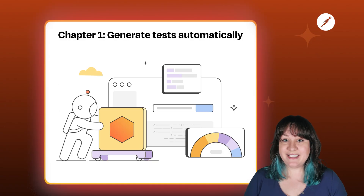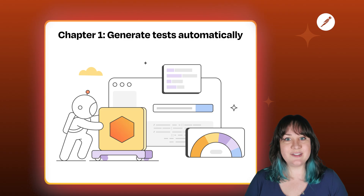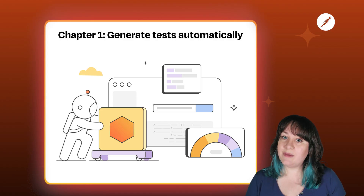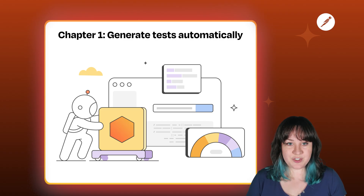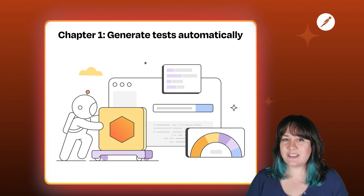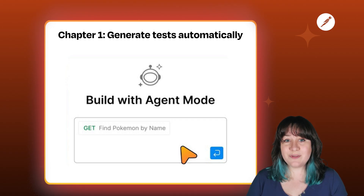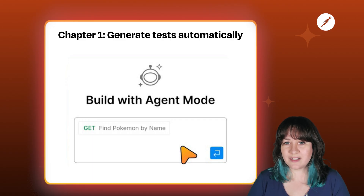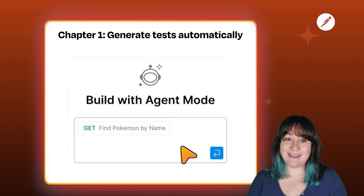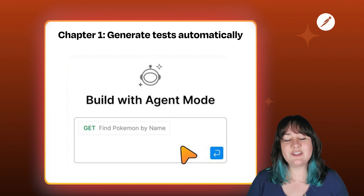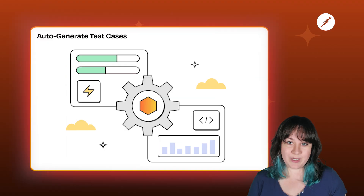The thing about writing and maintaining tests manually is that it's really time consuming. It's also repetitive, and like any manual process, it creates so much opportunity for errors and inconsistency. It's not how most of us really want to spend our development time. Agent Mode in Postman is able to automate those repetitive tasks, so your valuable time can be spent on more meaningful work, like adding new functionality, improving performance, and solving interesting problems.